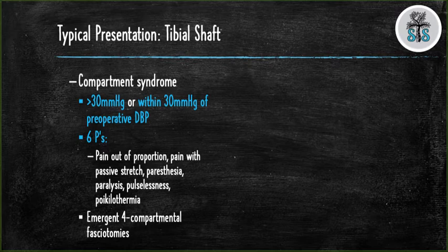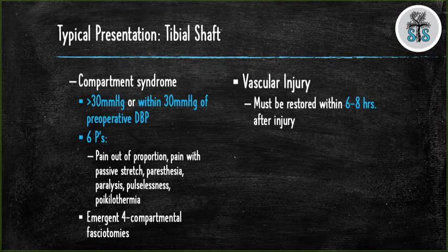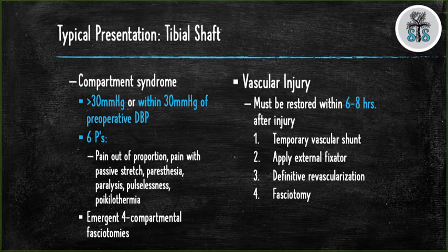You need to treat compartment syndrome with emergent fasciotomies. You need to have a high index of suspicion for injury to the vasculature; if there is injury, you need to restore blood flow within six to eight hours. The typical order consists of the vascular surgeon placing a temporary shunt, then placing the external fixator while the vascular team harvests a graft for definitive revascularization. After definitive revascularization, prophylactic fasciotomies are performed as reperfusion can cause compartment syndrome.